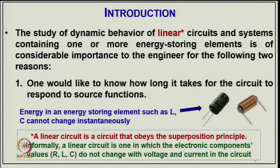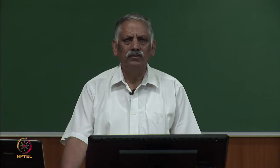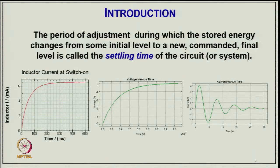That causes the transient response to happen in the circuit. The period of adjustment during which the stored energy changes from some initial level to a new commanded final level is called the settling time of the circuit or system. Here you can see how the transients appear — the current in the inductor rises from 0 and goes to the final steady-state value.